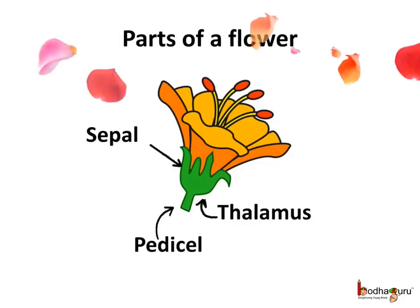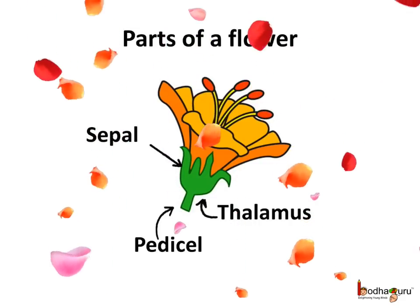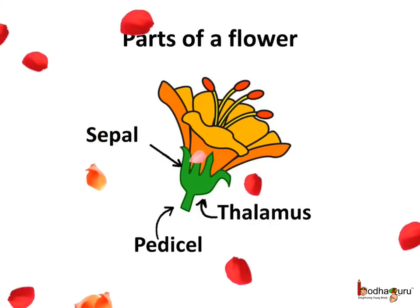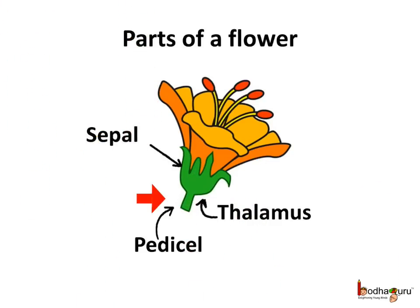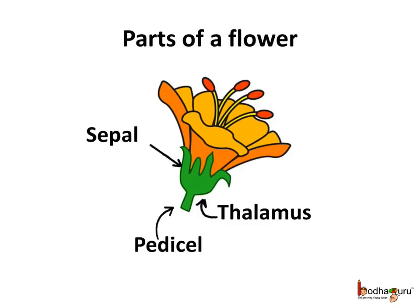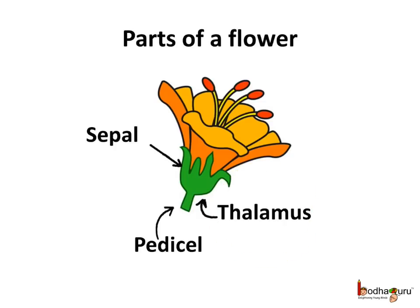The flower is the most beautiful part of the plant. Most flowers have a stalk which joins it to the stem of the plant — this part is called the pedicel. The uppermost part of the pedicel is wider and is called the thalamus. On top of the thalamus there are green leaf-like structures called sepals. A sepal protects the flower when it is in the bud stage, because the flower is completely inside the sepals at that time.